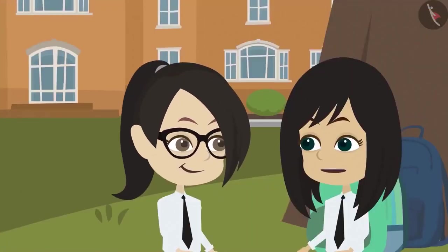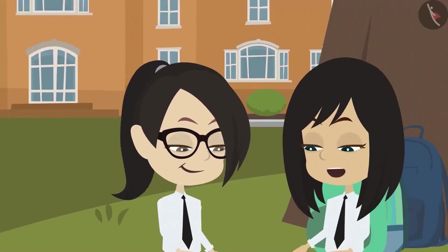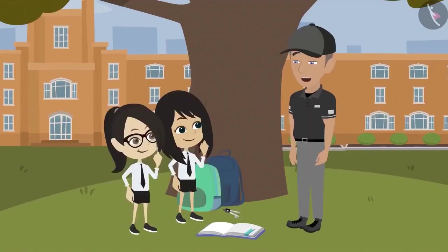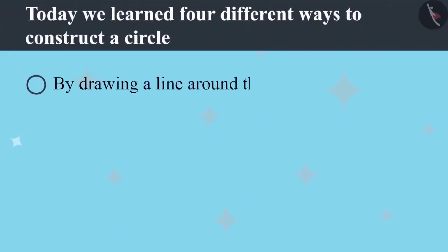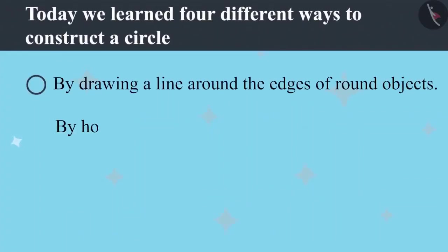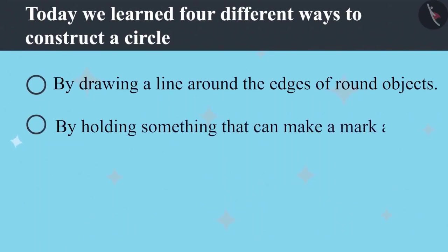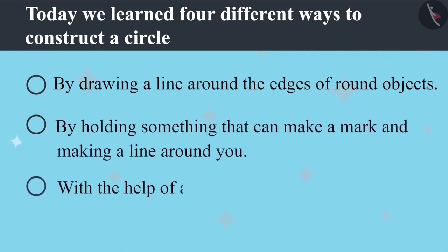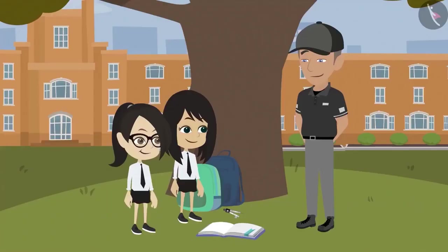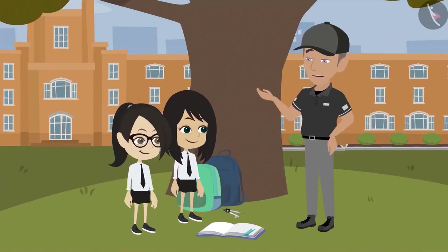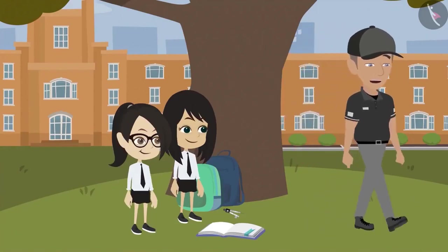Now we know four methods to draw a circle. First, by tracing the edge of round objects. Second, by holding something that can make a mark and making a line around you. Third, with the help of nail and thread. And fourth, by using a compass. Good. Now you go to your class and I'll go to my class.